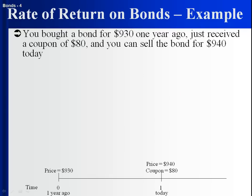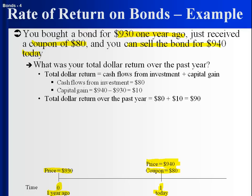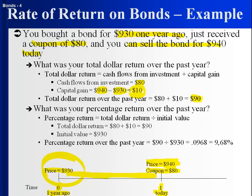Here's an example: you bought a bond for $930 one year ago, you just received a coupon of $80, and you can sell the bond for $940 today. Notice that today is time one, and one year ago is time zero. At the end of the period we have an $80 coupon and a bond worth $940 that was worth $930, so it's $10 more. Total dollar return is $90. The percentage return is $90 divided by $930, which is 9.68%.